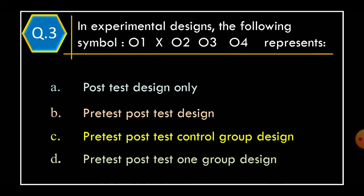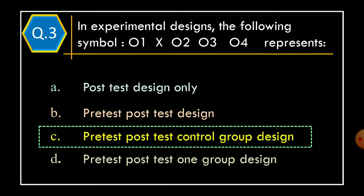Option A: post-test design only. Option B: pre-test, post-test design. Option C: pre-test, post-test control group design. Option D: pre-test, post-test one group design. And correct option is Option C: pre-test, post-test control group design.